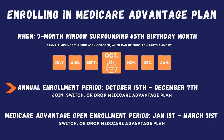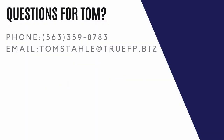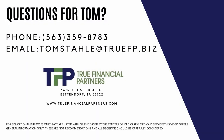Medicare Advantage plans also have the annual enrollment period: October 15th through December 7th. During that time you can switch from original Medicare to Medicare Advantage, vice versa, or switch between Advantage plans. Additionally, Medicare Advantage has an open enrollment period from January 1st to March 31st each year — the only difference being that you cannot switch from original Medicare to a Medicare Advantage plan during this window.